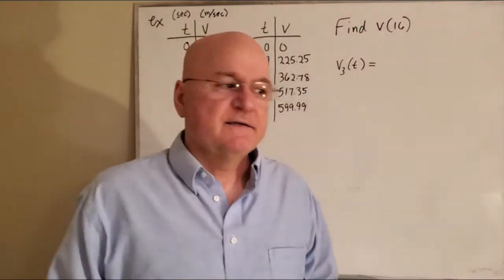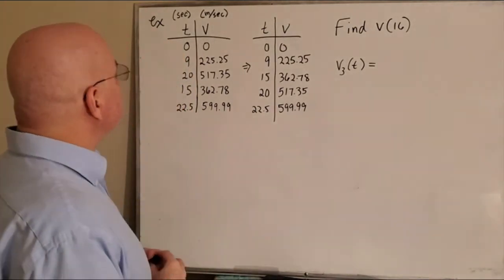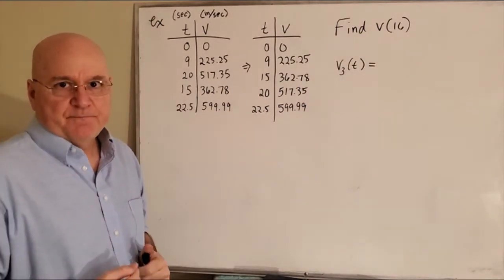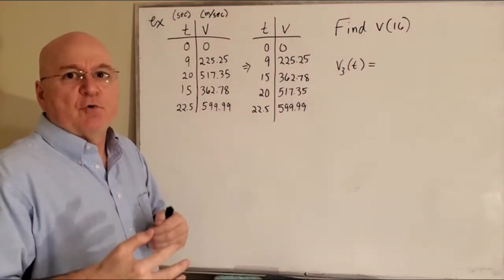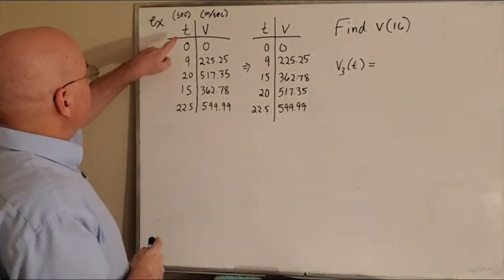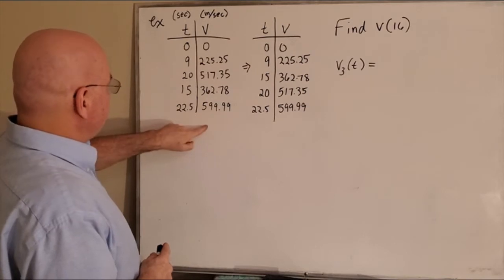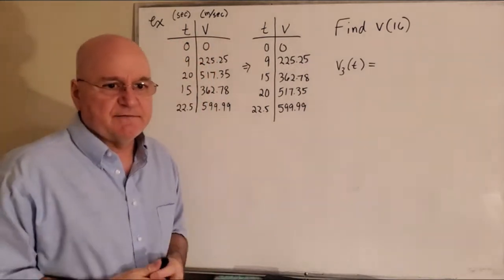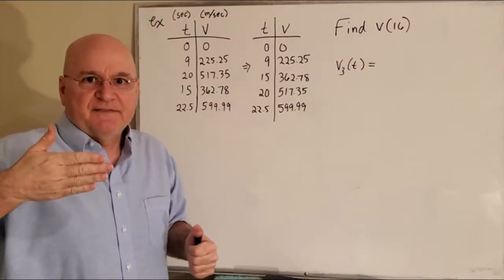Okay, let's do a quick degree one spline interpolation example. Here's a table of data, a set of ordered pairs that we're calling time and velocity. So the first ordered pair is zero, zero. You could think of it as being a rocket taking off or a race car stopped, and then it's going to accelerate.